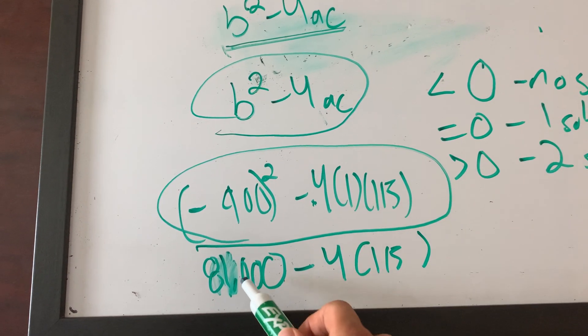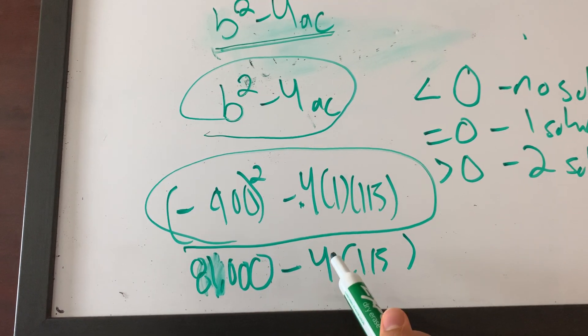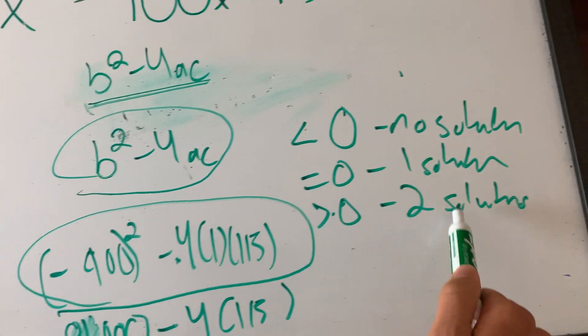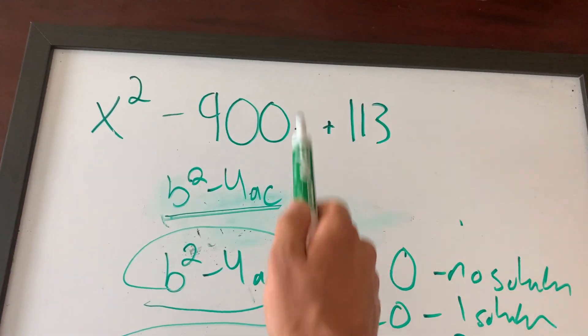81,000 subtracted by, well, like 4 times 113. Guys, this is not bigger than 81,000. This will result in a positive number, which means greater than 0, which means two solutions, which means the answer to this problem is two solutions.